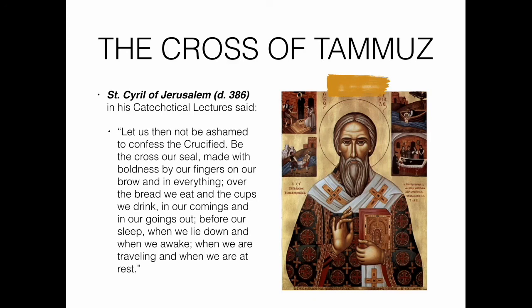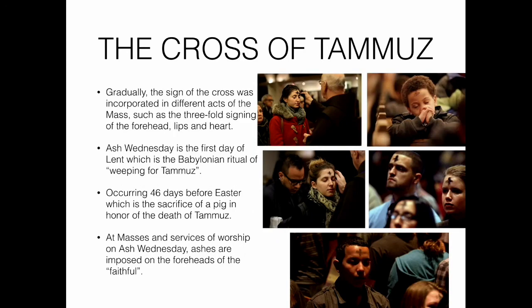Gradually the sign of the cross was incorporated in different acts of the mass, such as the threefold signing of the forehead, lips, and heart. Ash Wednesday is the first day of Lent — the Babylonian ritual of weeping for Tammuz — occurring 46 days before Easter, which is the sacrifice of a pig in honor of the death of Tammuz. At masses and services on Ash Wednesday, ashes are imposed on the foreheads of the faithful — literally the mark of the beast on your forehead.